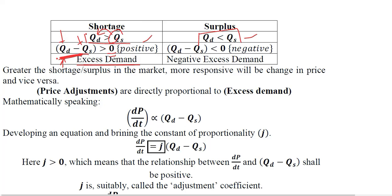On the surplus side, shifting QS gives a negative value — it is less than zero. This is again measuring excess demand, but it is a negative value, so we call it negative excess demand. We have modeled the shortage and surplus concepts from static analysis in mathematical equations in terms of excess demand, and we will focus on this variable going forward.